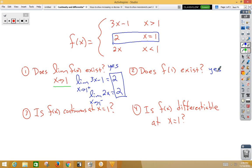Number 3. Is f of x continuous at x is equal to 1? The definition of continuity is the two-sided limit equals the value at the point. So, the limit as x approaches 1 of f of x is equal to 2, which is equal to f of 1, which is also 2. So yes, the graph is continuous.